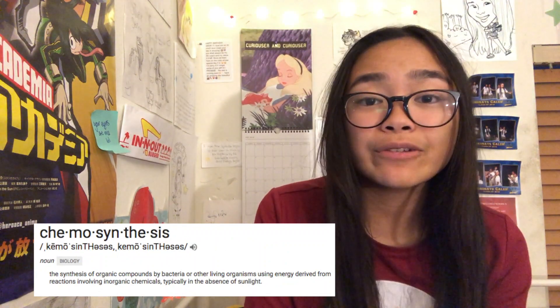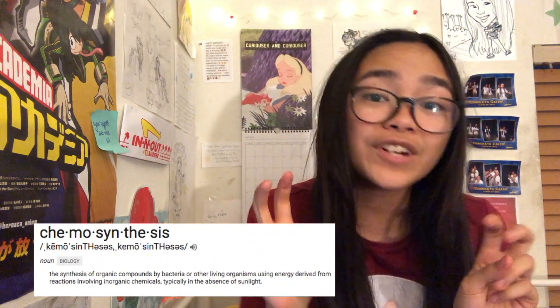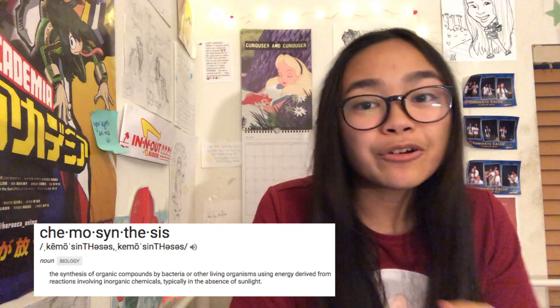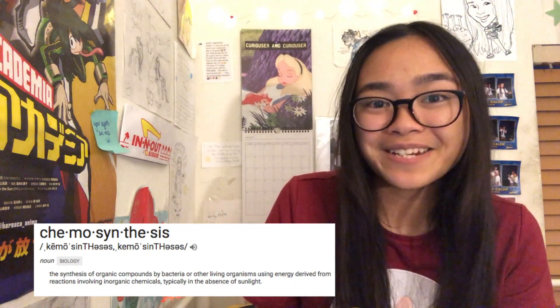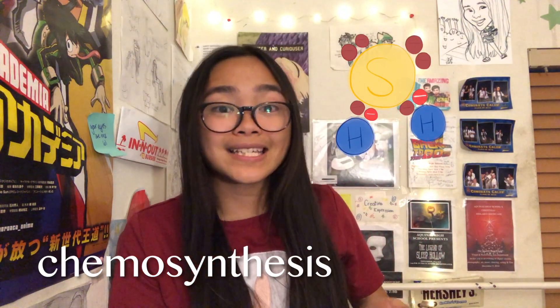Chemosynthesis is the use of chemical energy to synthesize sugar or food using carbon dioxide, an inorganic compound, and oxygen. This process is like photosynthesis but it works without sunlight. Photosynthesis is powered by photons, while chemosynthesis is powered by the oxidation of inorganic compounds.